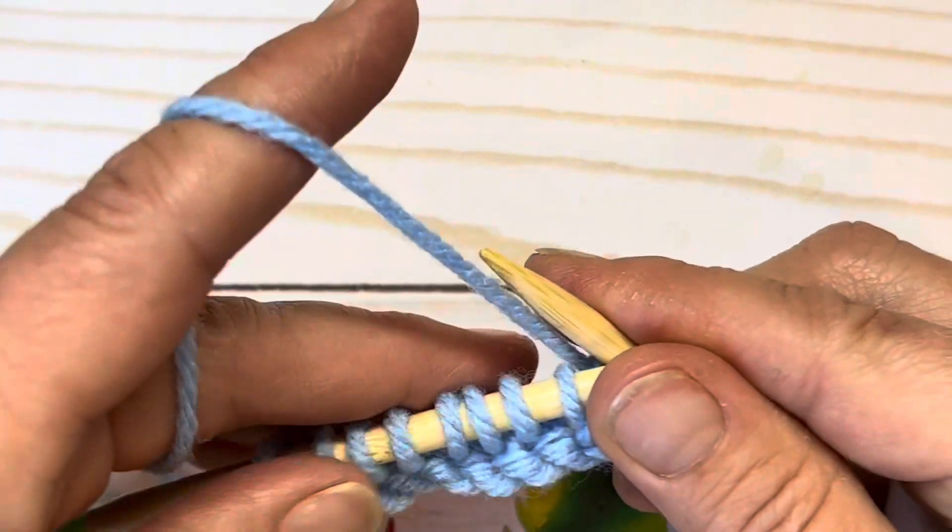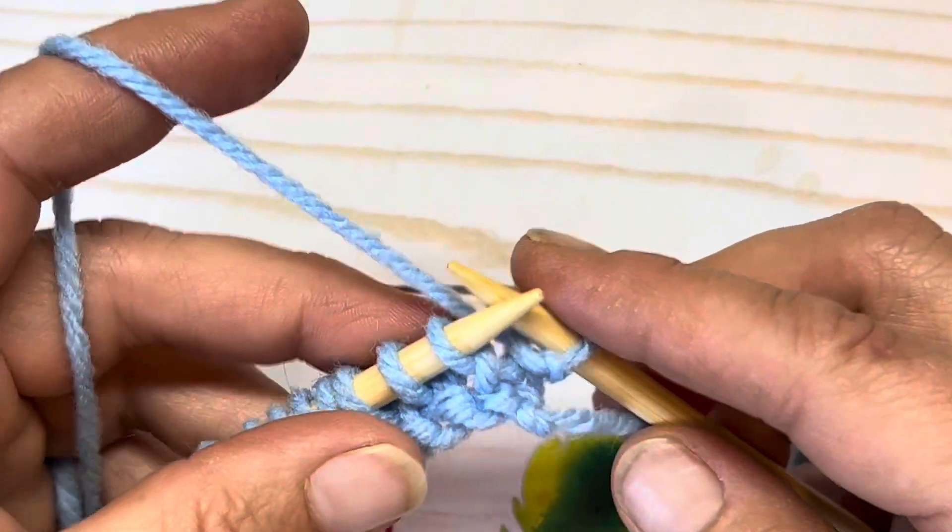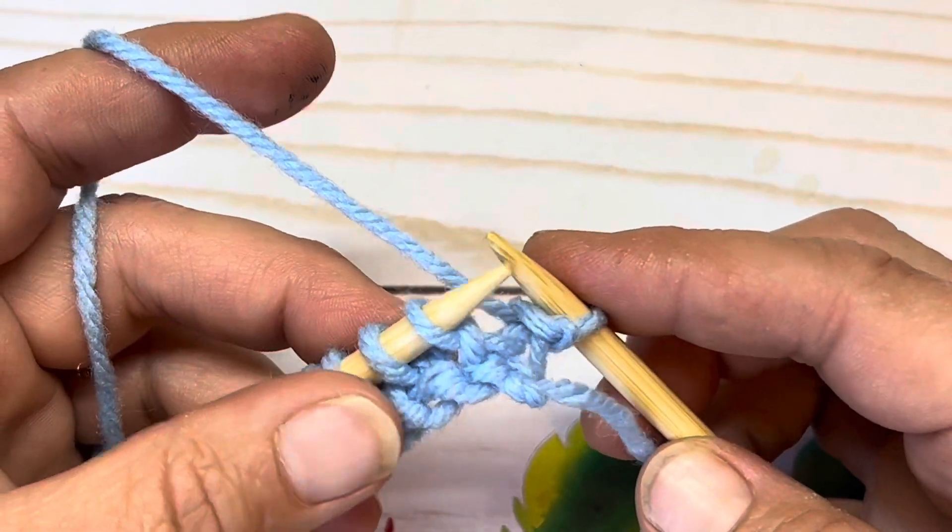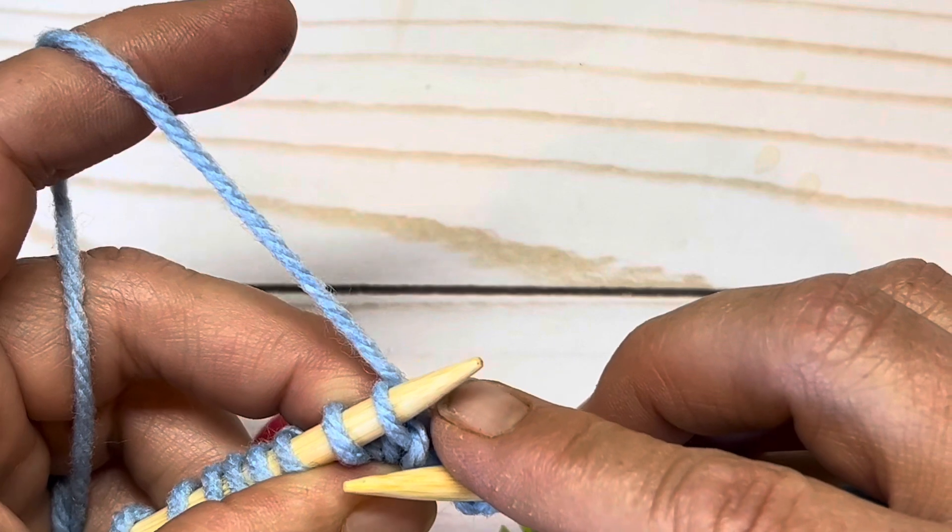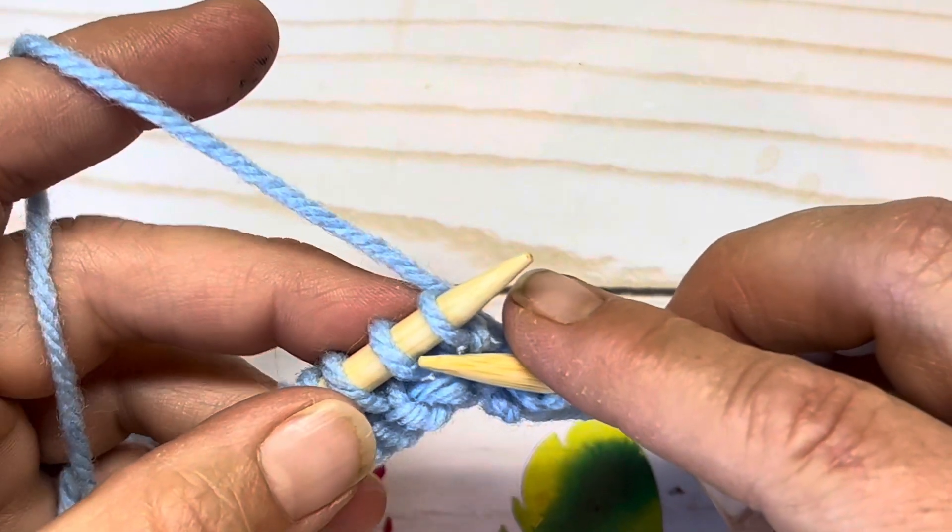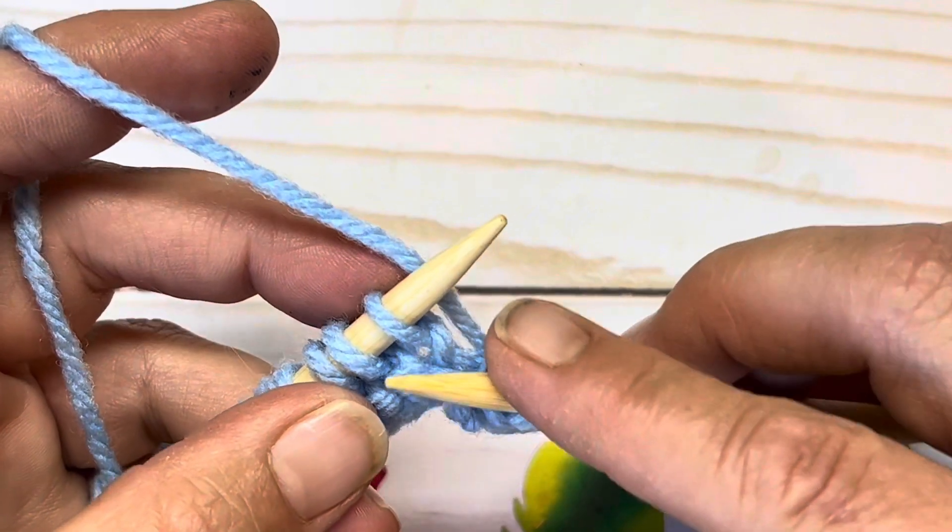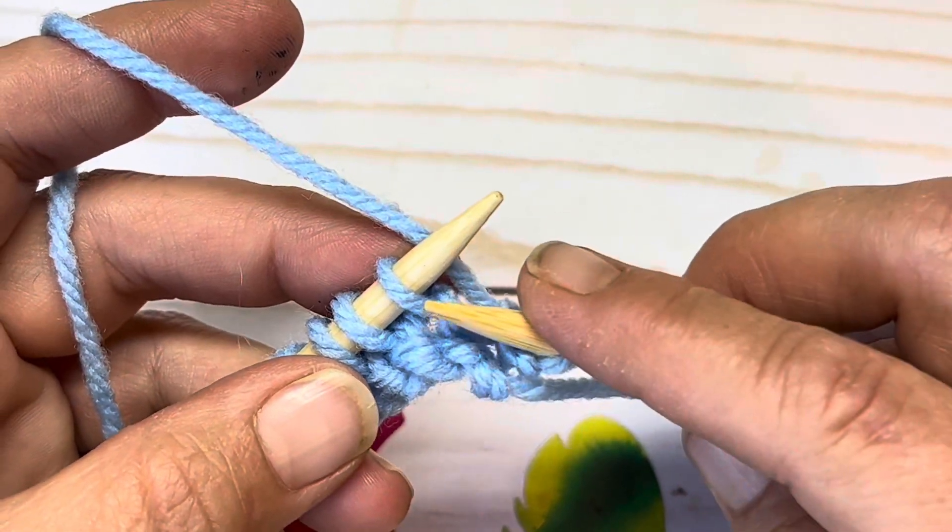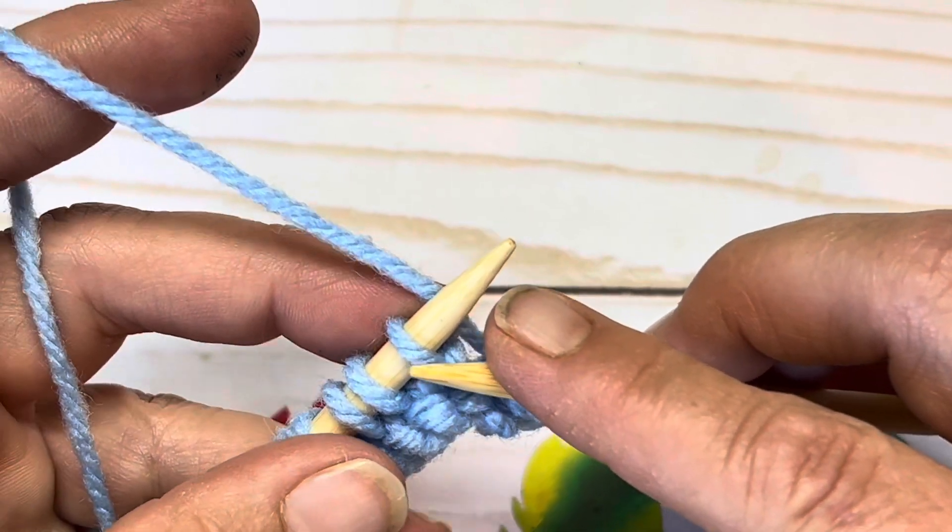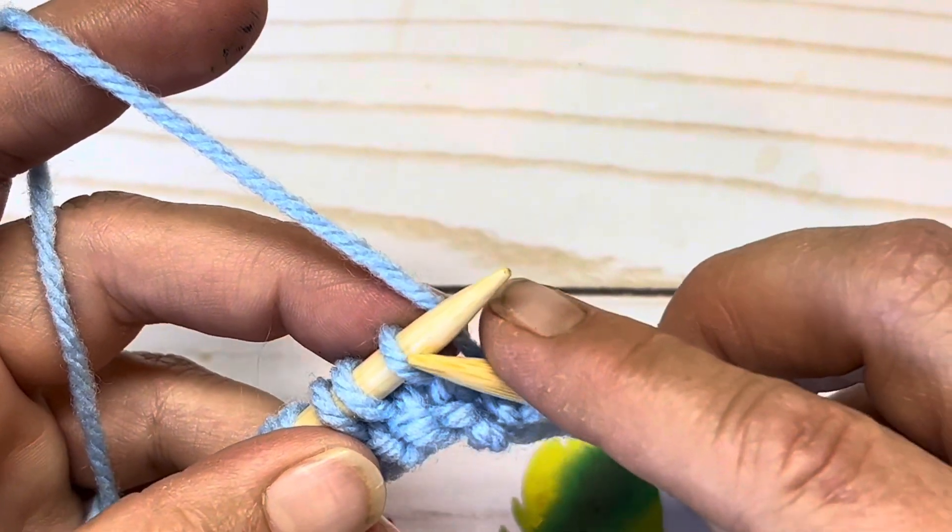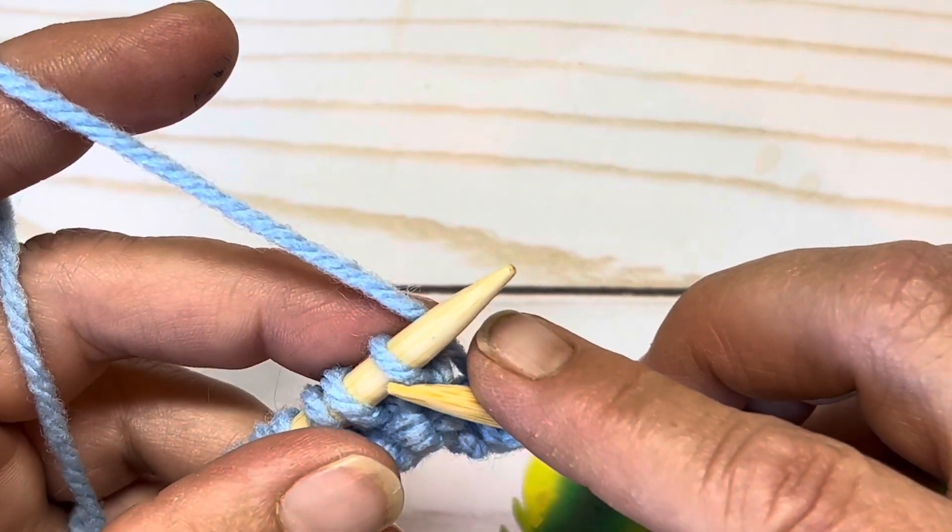Now the next is a slip slip knit, and I'm going to show you how I do it. It creates the same exact effect, and you're not having to slip any stitches off and then knit them. You can do it however you choose. If you prefer the standard slip slip knit, by all means, go for it. This is how I learned a quick, easy way to do it.